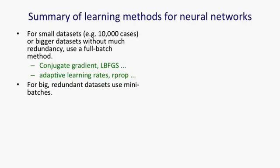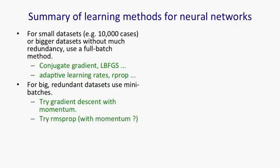If you have a big redundant data set, it's essential to use mini-batches — it's a huge waste not to do that. The first thing to try is standard gradient descent with momentum. You're going to have to choose a global learning rate, and you might want to write a little loop to adapt that based on whether the gradients change sign. But to begin with, don't go for anything as fancy as adapting individual learning rates for individual weights. The next thing to try is RMSProp, which is very simple to implement without momentum. In my experiments so far, that seems to work as well as gradient descent with momentum. You can also consider improving RMSProp by adding momentum or adaptive step sizes for each weight, but that's still basically uncharted territory.